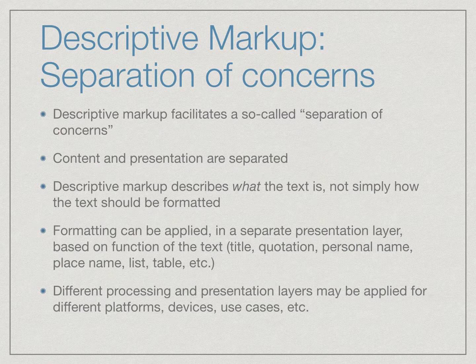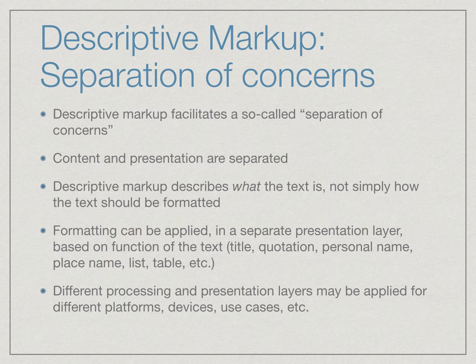Descriptive markup facilitates a so-called separation of concerns, in which issues of presentation and formatting are separated from description of the content. Descriptive markup tells us what the text is rather than how it looks. With this separation, formatting can be applied in a distinct presentation layer based on the function of the text — for example, title, quotation, name, list, table, and so on. Different processing and presentation layers may be applied for different output devices and use cases.